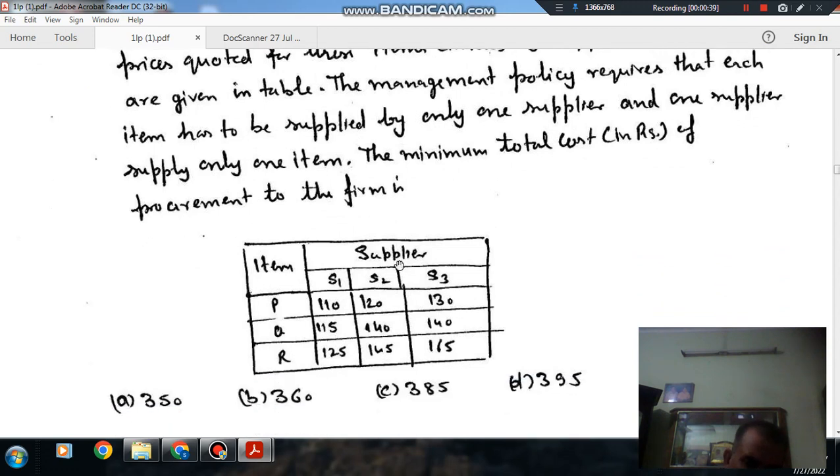Supplier S1, S2, S3 and items are P, Q, R. P to S1 is 110, P to S2 is 120, P to S3 is 130. Q to S1 is 135, Q to S2 is 140 and Q to S3 is 140. R to S1 is 125, R to S3 is 140.